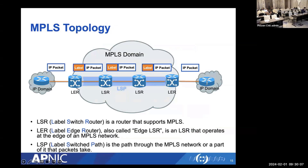There are some MPLS terminologies to be familiar with. An LSR (Label Switch Router) is a generic term for any MPLS-capable router. An LER (Label Edge Router), also known as edge LSR, operates at the edge of the MPLS network — also called PE in MPLS VPN scenarios. The Label Switch Path (LSP) is the path through an MPLS network that packets take — from LER to LER.